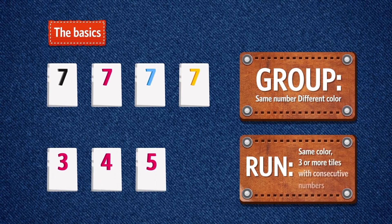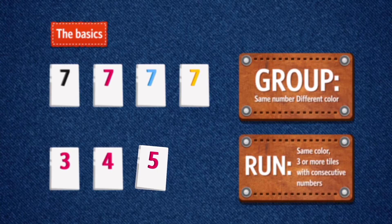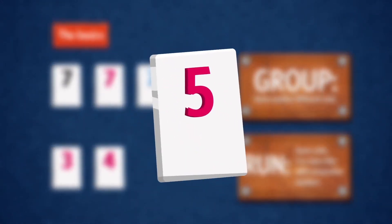Run: same color, three or more tiles with consecutive numbers. See the number on the tile? That's its value.